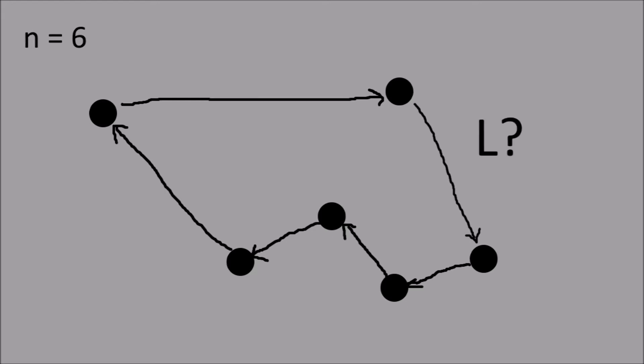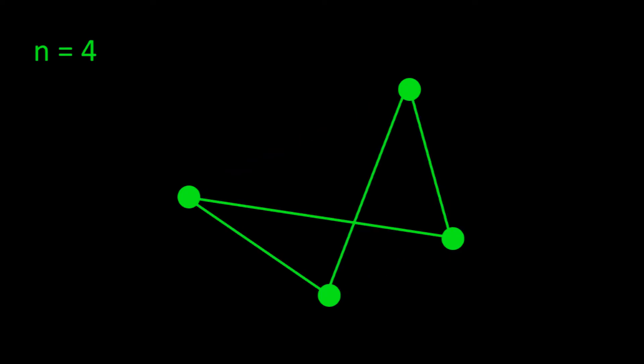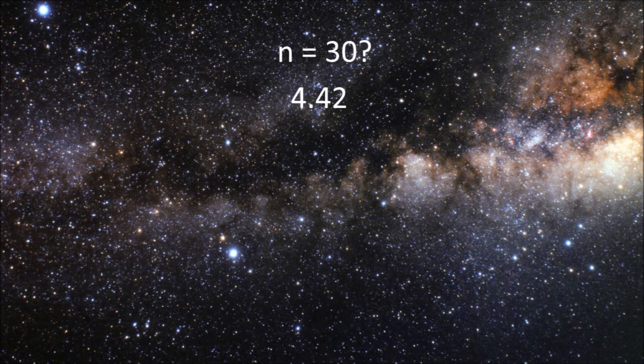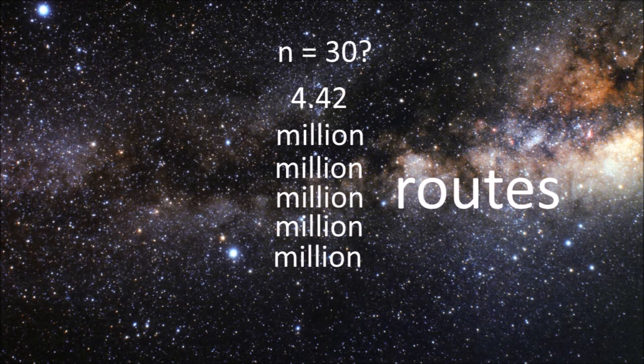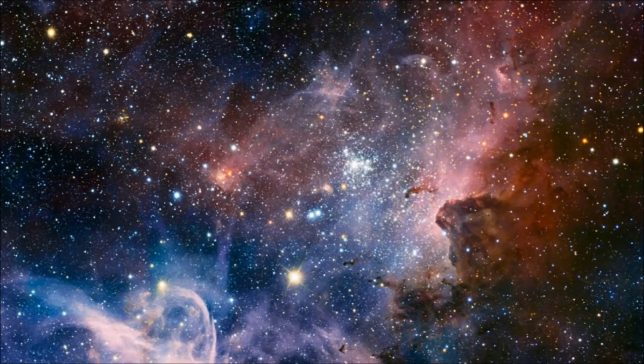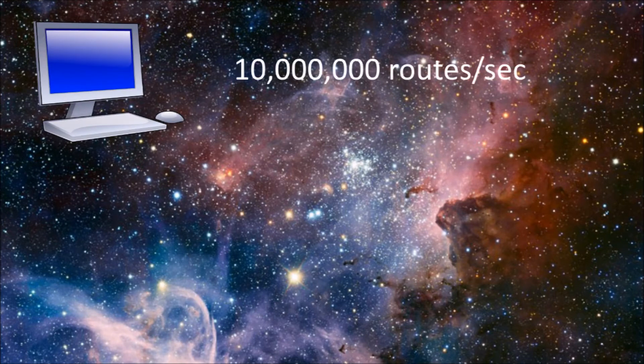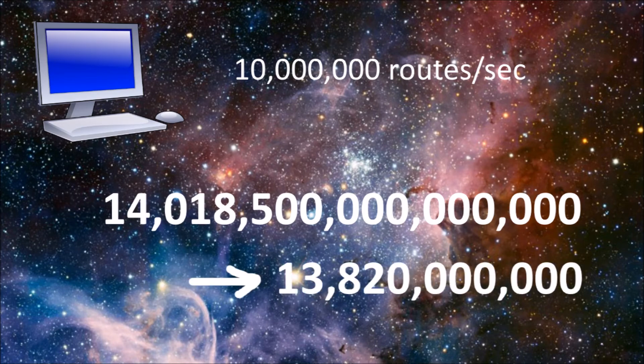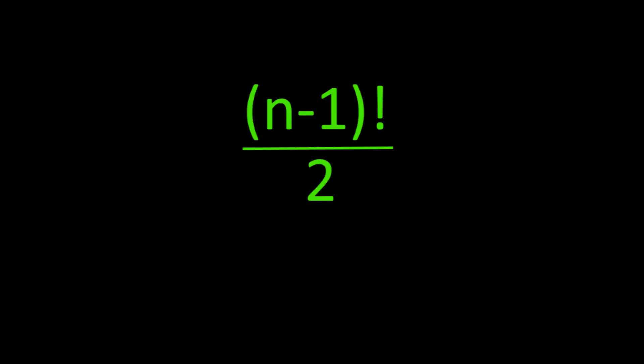An easy way to do this is to check every possible route the salesman can take. 4 cities? We check 3 routes. 5 cities? 12 routes. 30 cities? About 4.42 million million million million million routes. So in other terms, if we had a computer calculating 10 million routes a second, it would take about this many years — and that many years is the age of the universe. Why so long? The number of routes we need to calculate is equal to (N-1) factorial over 2, meaning the number of steps increases factorially with our input size. Therefore, our Big O is O(N!).